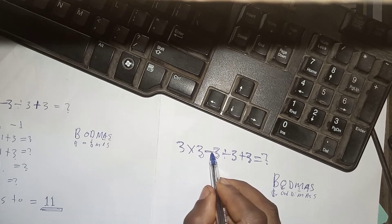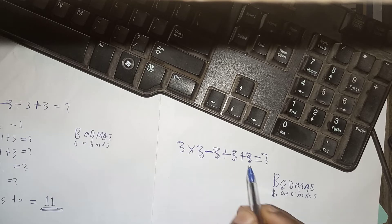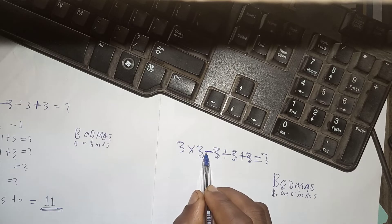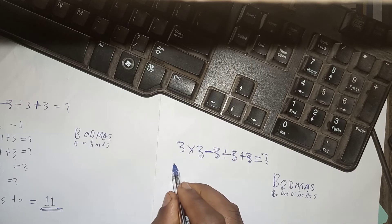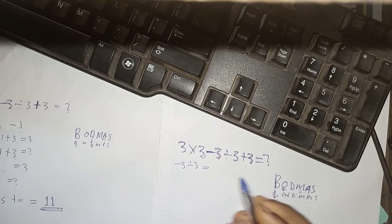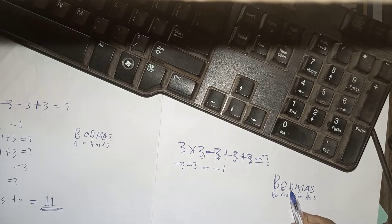And also remember that this negative 3, this negative is attached to this 3. So, we are not going to divide 3 divided by 3. We are going to take negative 3 divided by 3. So, negative 3 divided by 3 is equal to negative 1. That is for division.